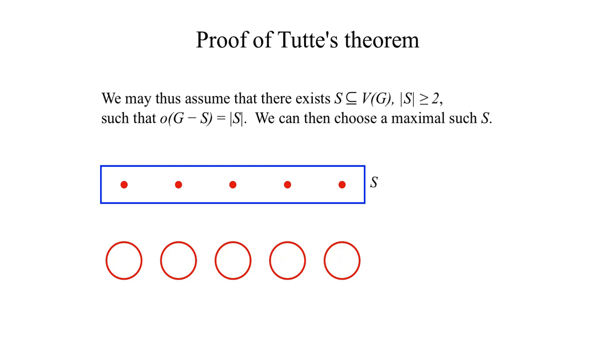First we show that the odd components of G minus S can be paired 1-to-1 with vertices of S to which they are connected in G. To do this, we use Hall's theorem.